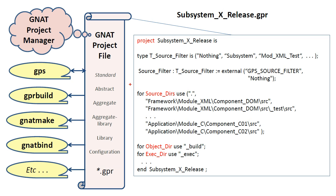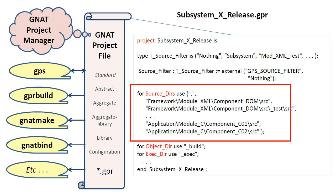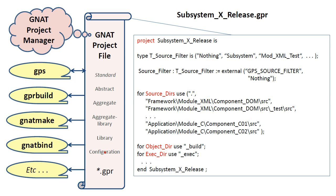The SourceTiers attribute is used to specify a list of directories where source code may be found. Although not illustrated in this slide, the attributes of a project contain values that can be read using the notation project'attribute. For example, because the project manager implicitly records the directory in which the project was started, we can read this using project'project_dir. The location of directories specified using an attribute are relative to the location of the project file.